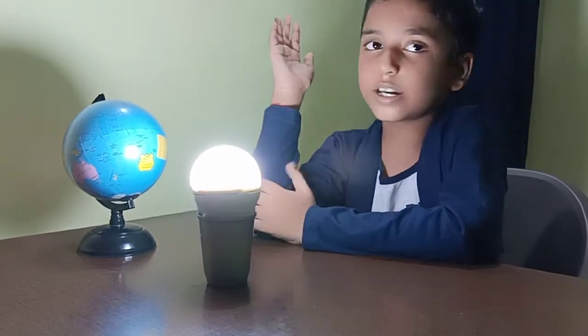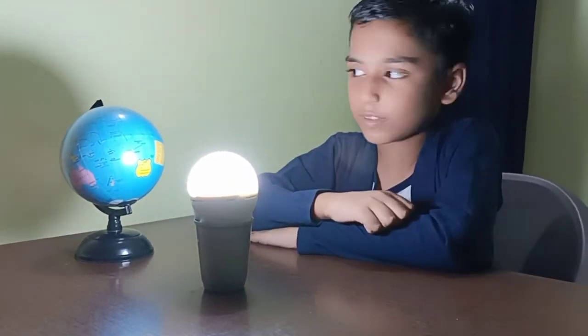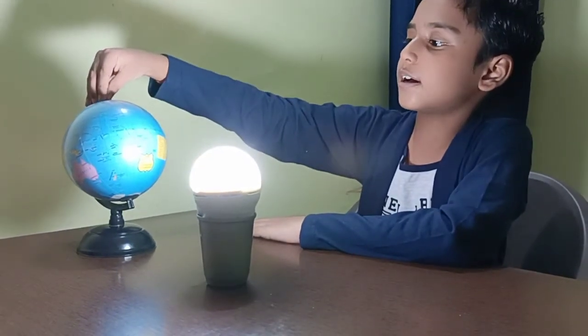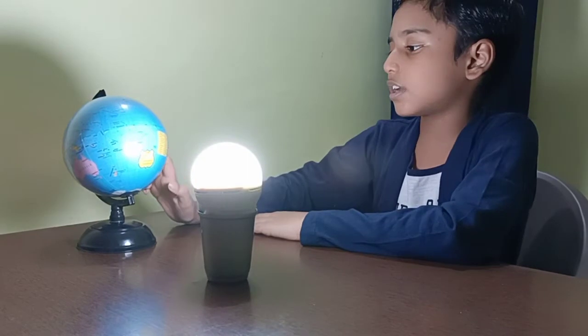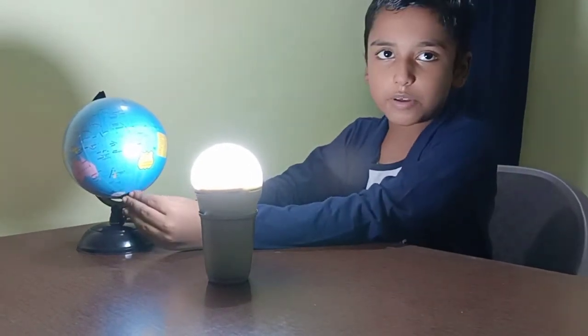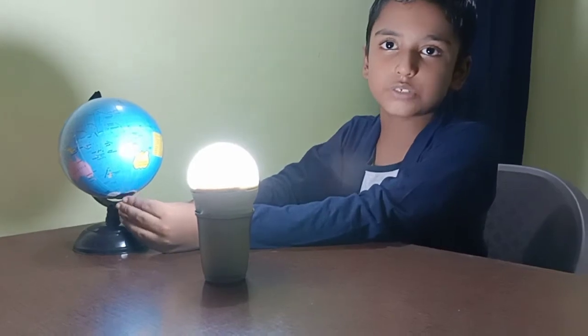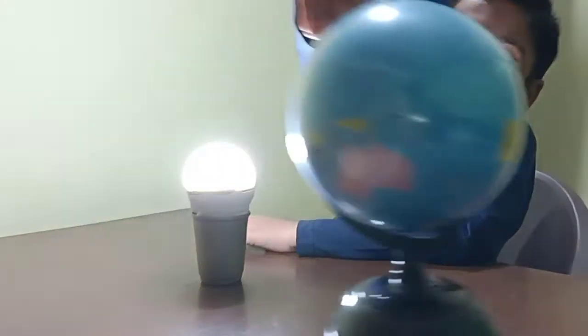The tilt of our earth is why the season changes. The upper part of our earth is called northern hemisphere, the middle part is called equator, and the lower part is called southern hemisphere. We note that earth is revolving around the sun.